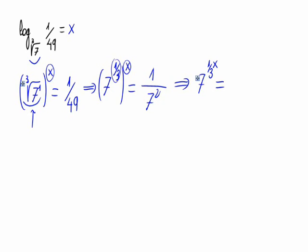If we have a power on the denominator, it will go up as a minus. So it will be 7 raised to minus 2. As we have two powers with the same base, the exponents will be the same.